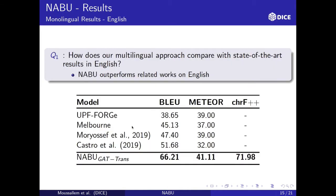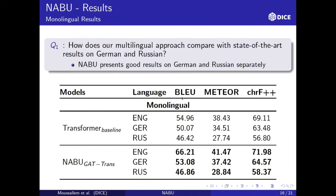For the first research question, NABU outperforms related works on English, showing that graph attention plus transformer correctly models the graph and generates good text. We also performed evaluations on chrF, which no previous work had used. Analyzing German and Russian results separately, with three models in English, German, and Russian, NABU with graph attention was able to outperform the transformer baseline.